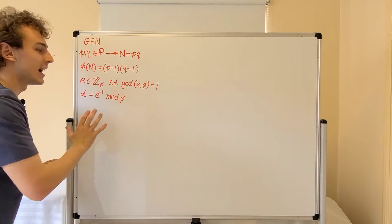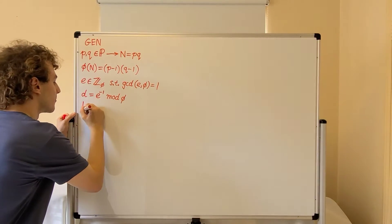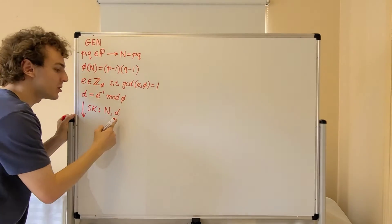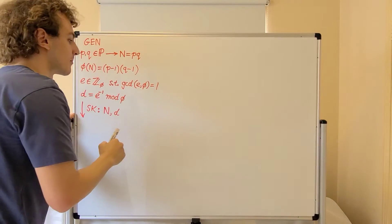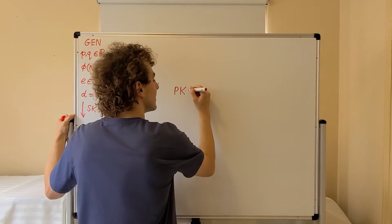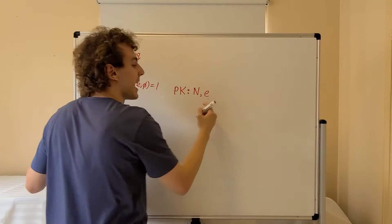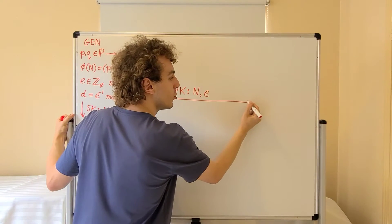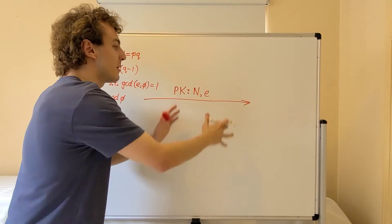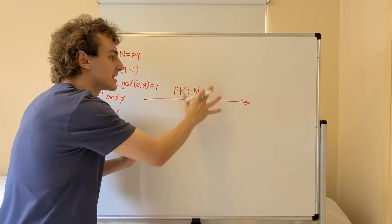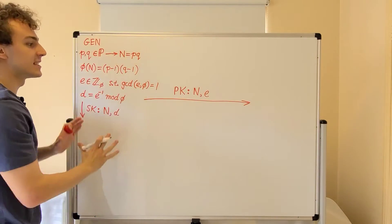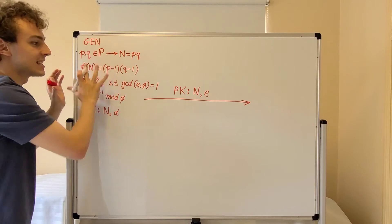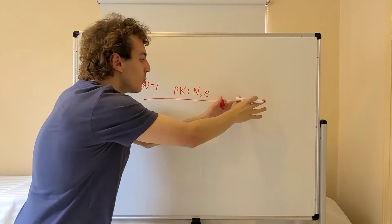Let's look at this key pair. The secret key SK consists of N and D — we use this for decryption. The public key PK consists of N and E — we use this for encryption. We send the public key through a public channel. Adversaries performing cryptanalysis have access to information going through the public channel, but not to the secret information. So only the participant doing key generation knows the private values; they are only sending N and E through the public channel.